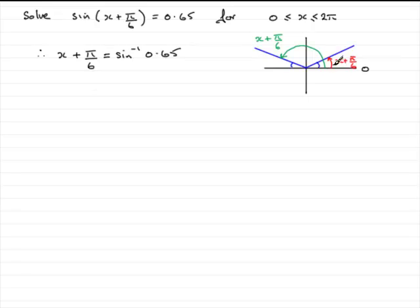Now the question is, what are these two angles? Well if you inverse sine 0.65 on your calculator, make sure you're in radians mode, what you should find that you get is 0.7075 and so on.